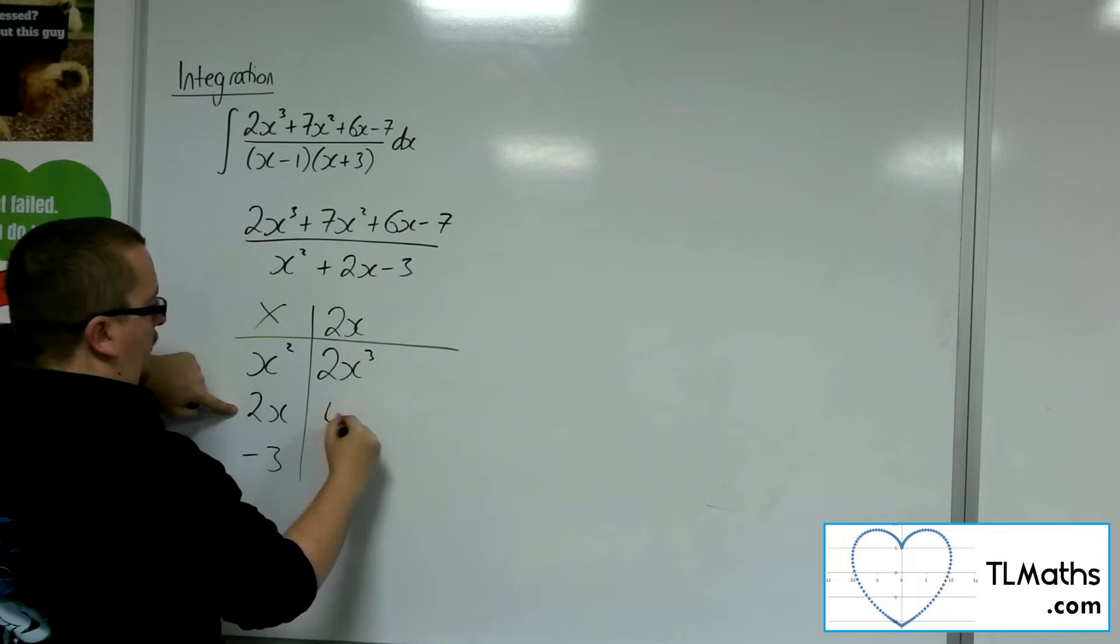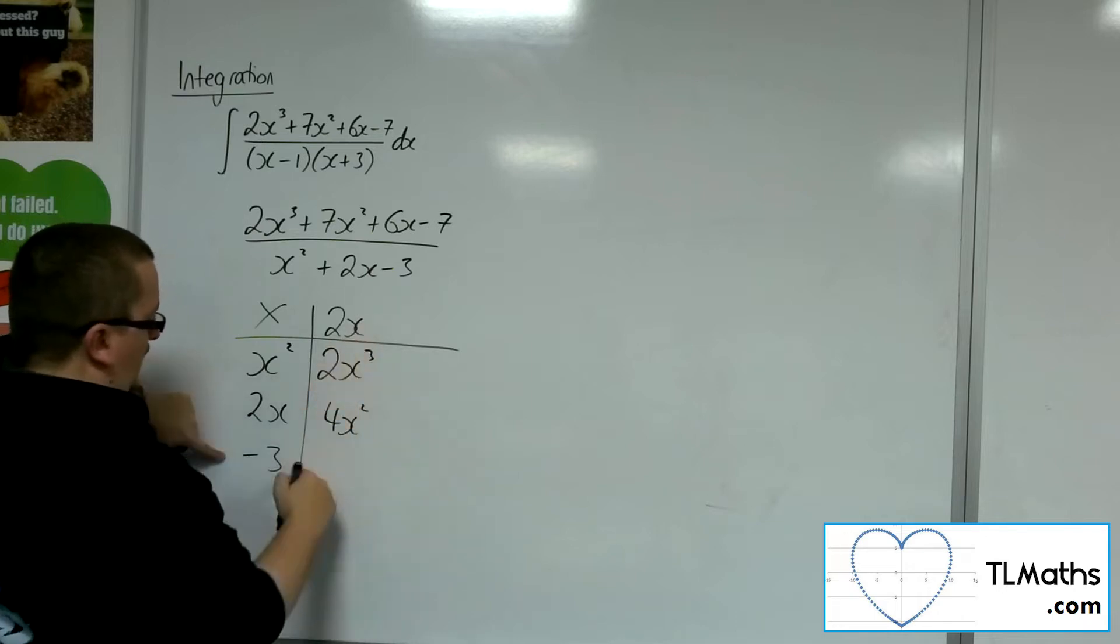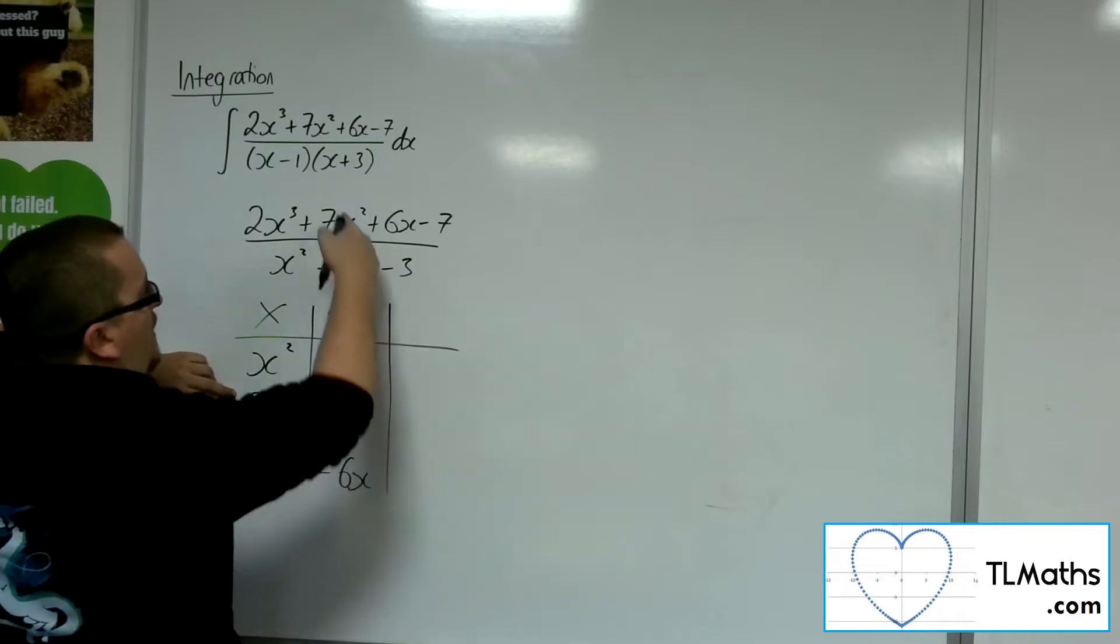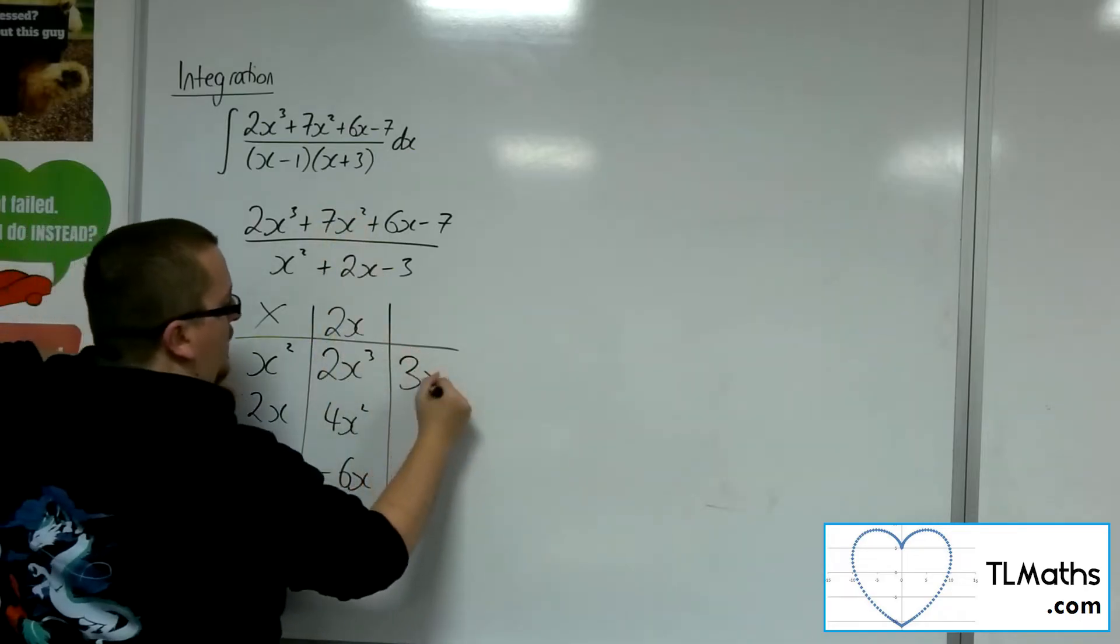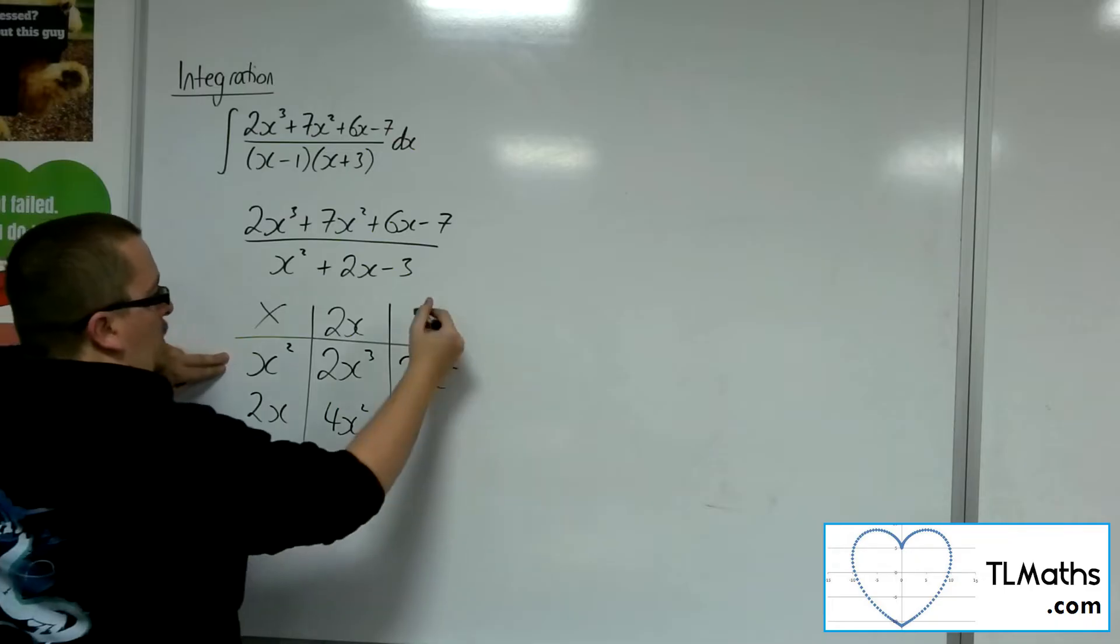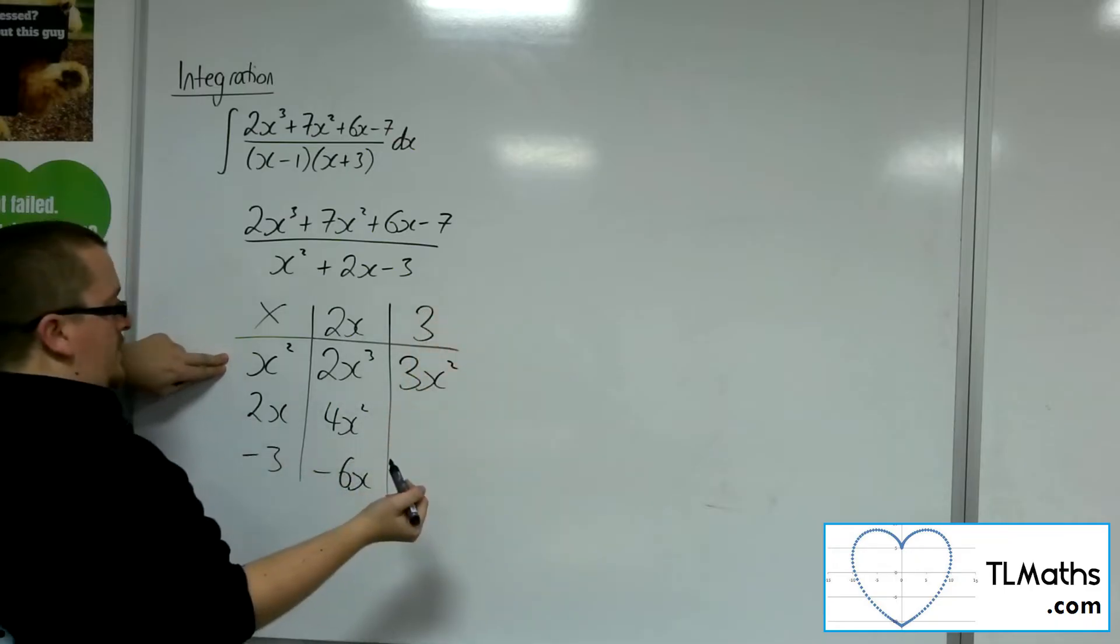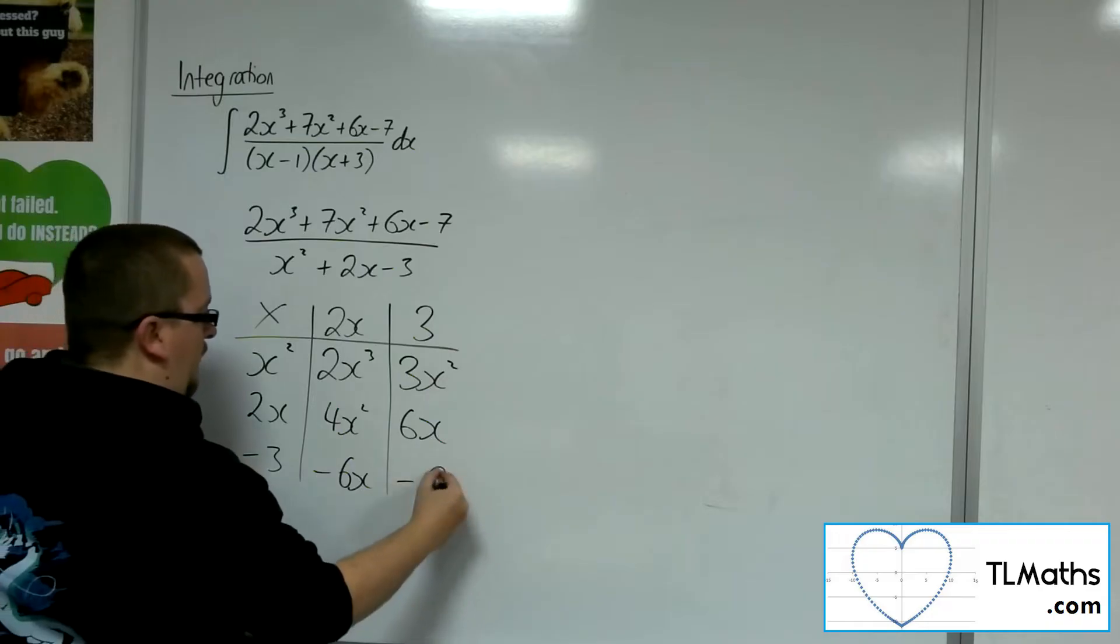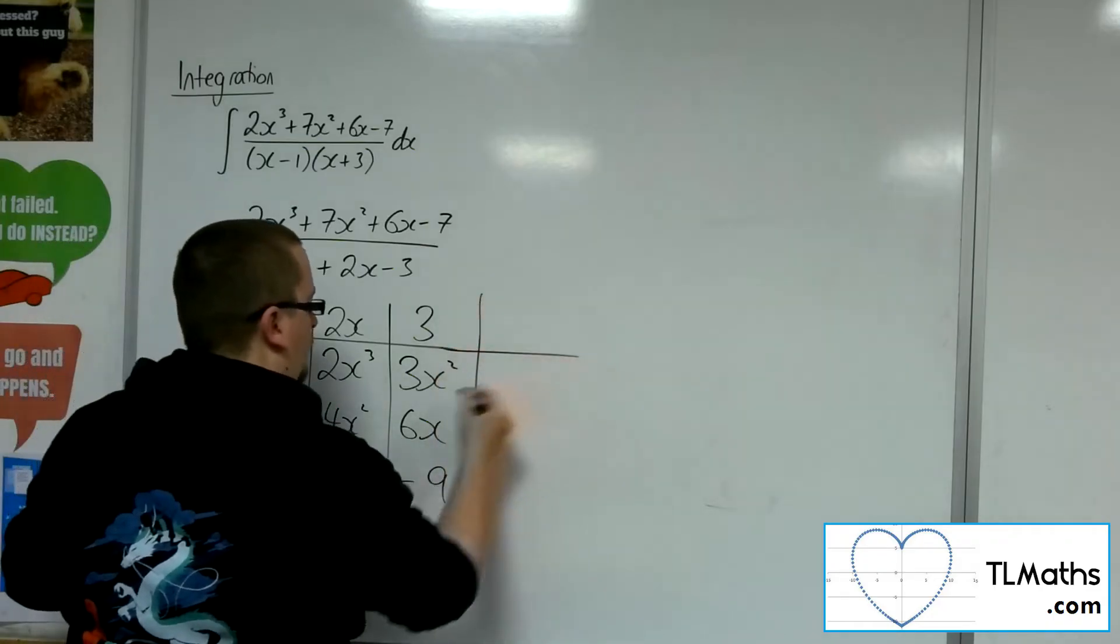2x times 2x is 4x squared. 2x times minus 3 is minus 6x. Now I've got 4x squared already. I need 7x squared, so I'm going to need another 3x squared. So I'm going to have to have 3 there. 3 lots of 2x is 6x. 3 lots of minus 3 is minus 9.